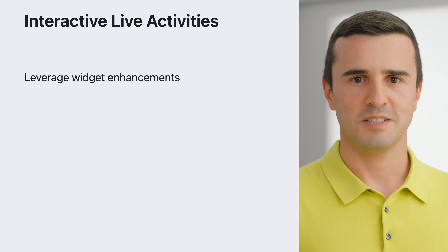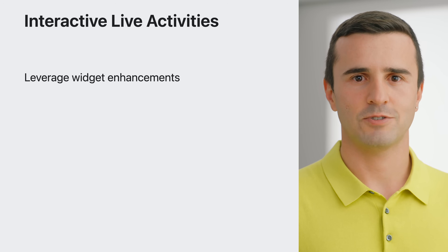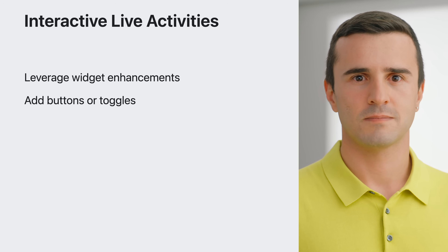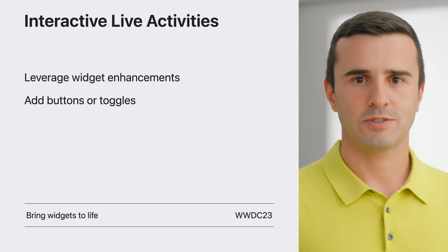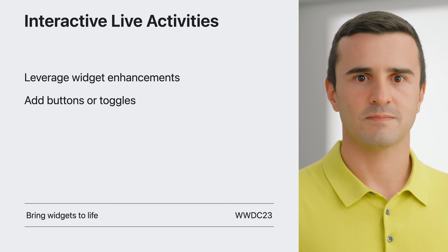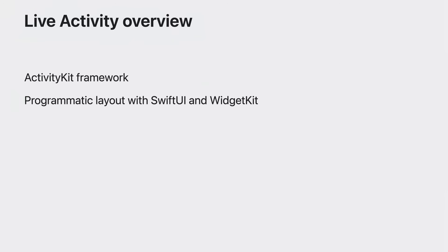With iOS 17, you can add interactivity to your live activities using WidgetKit and SwiftUI. You can add buttons or toggles to enhance the user experience. Learn more about how to bring interactivity to your widgets in Luca's video, Bring Widgets to Life. Live activities rely on the ActivityKit framework, empowering your app to request, update, and manage their life cycles. They are laid out declaratively using SwiftUI and WidgetKit.